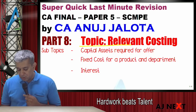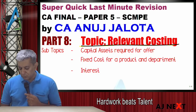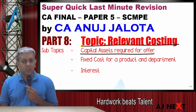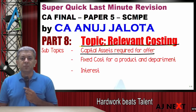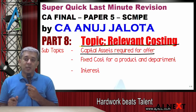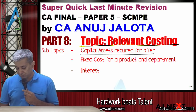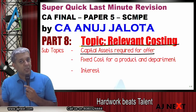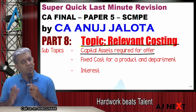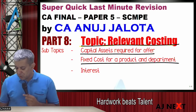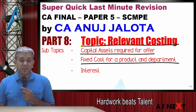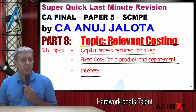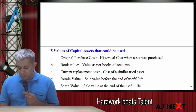So we are trying to do a topic of relevant costing. Uske andar I am going to be covering up three subtopics today. Capital assets — joh offer ke liye chahiye, koi ek offer aa hai, sir uske liye machine chahiye, equipment chahiye, plant chahiye, kya woh humare paas hai, nahi hai. Capital assets ka life ek saal se zyada hota hai, offer ek saal ka hai. Fixed cost for a product and for a department. Aur lastly, interest ke baare mein kab baat kiya jata hai in any question. So start kar lete hain.